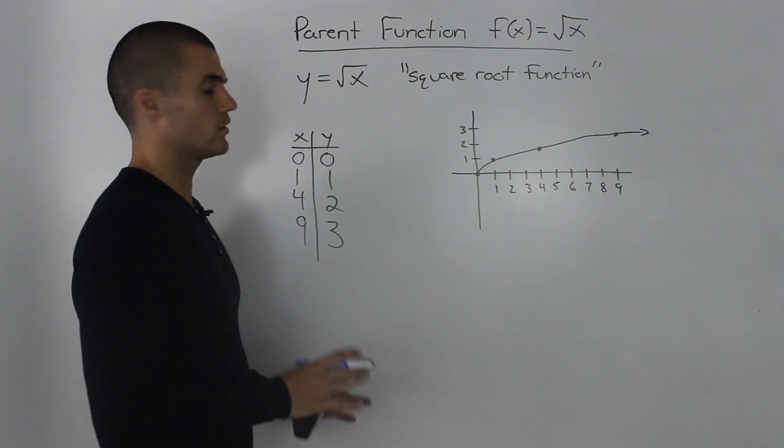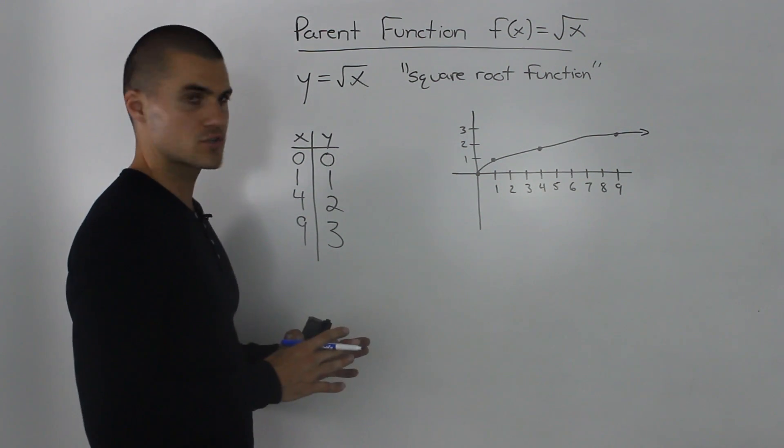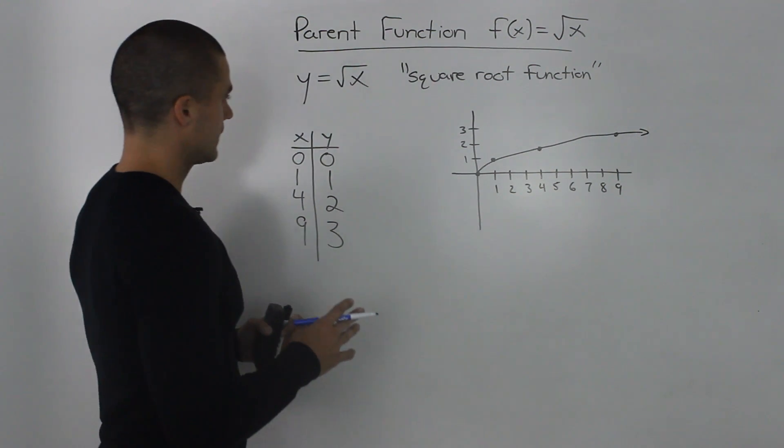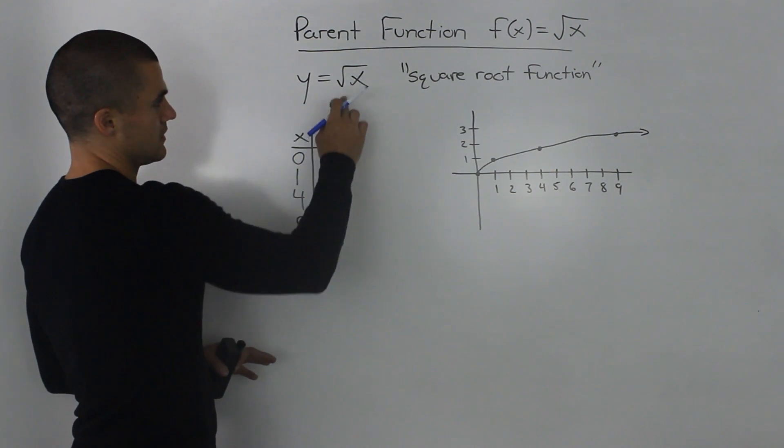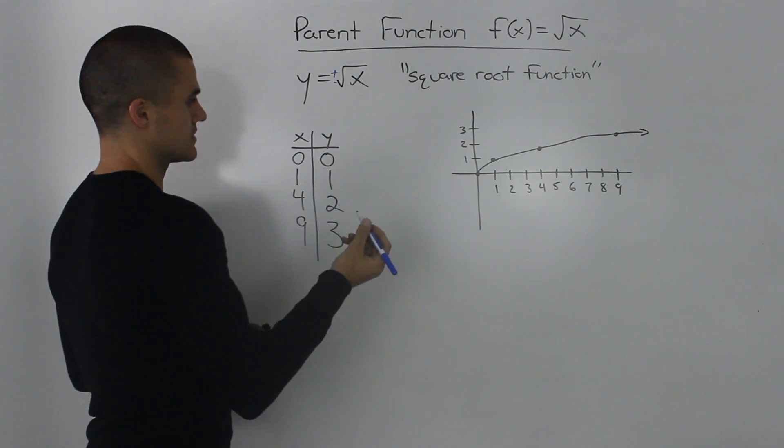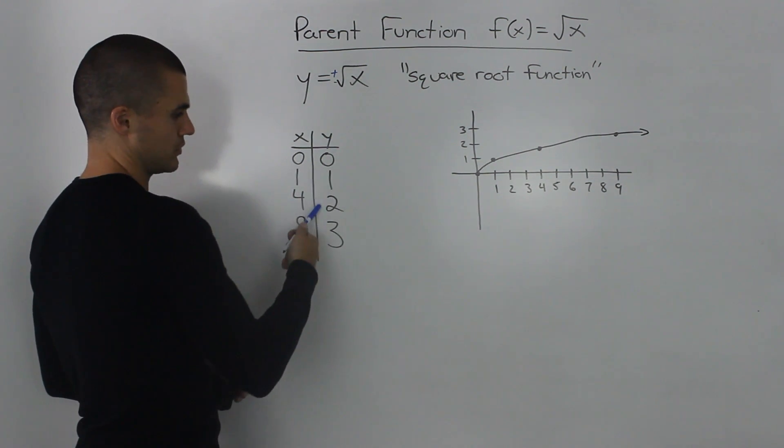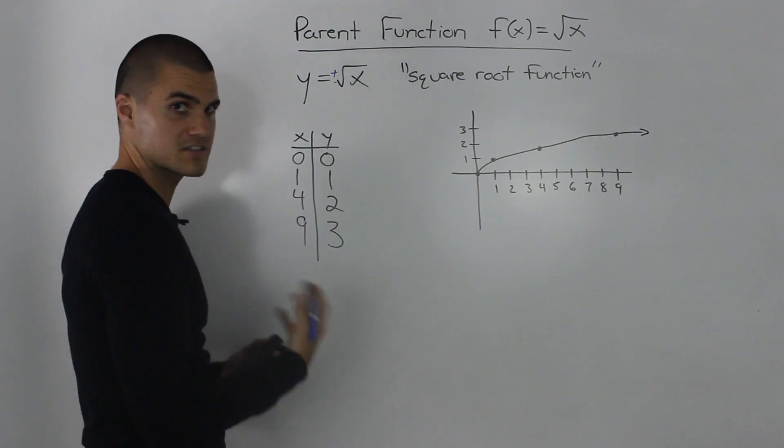Now an additional point that I want to make, and it's a point that causes some confusion for students, is that technically when we square root a number it could be plus or minus. So technically the square root of 1 can be plus or minus 1, plus or minus 2, plus or minus 3.